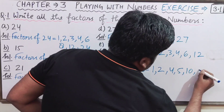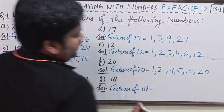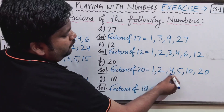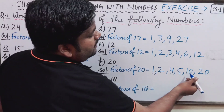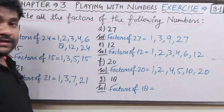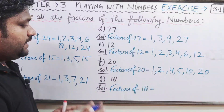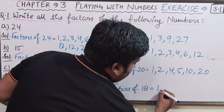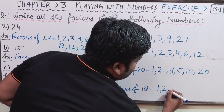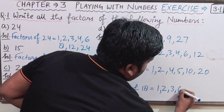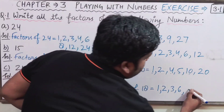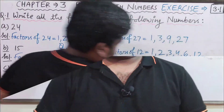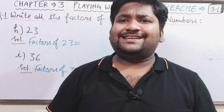Factors of 20: it is divisible by 1, 2, 4, 5, 10, and 20 — so factors of 20 are 1, 2, 4, 5, 10, and 20. For 18: factors are 1, 2, 3, 6, 9, and 18. We have now completed up to part g.